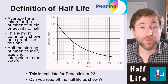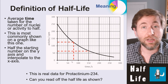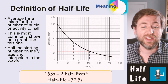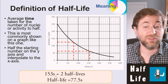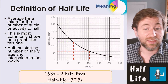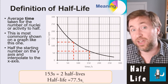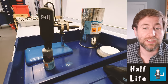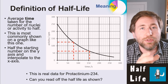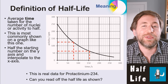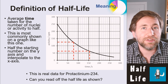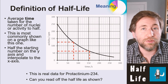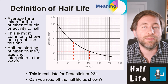Half of 125 again — go across to the line, then down to the x-axis and read off the value, which came to about 153. That was two half-lives, so halving that gives 77.5 seconds as the half-life of protactinium. Make sure you show your interpolation on the graph, because even if you read off slightly inaccurately, you'll still get a mark for demonstrating that skill in your exam.